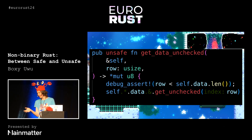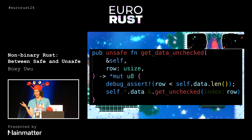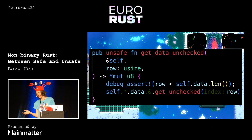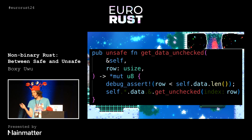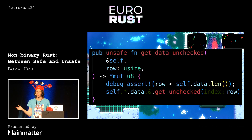We have this type that is effectively like a vec, but we don't know the type of the data we're storing. We have this get function and it returns a raw pointer, which is not really what a vec normally looks like — you'd normally return a borrow of some type T. In this case, that would be why we're using unsafe, because we don't know the type, so we have to use raw pointers.